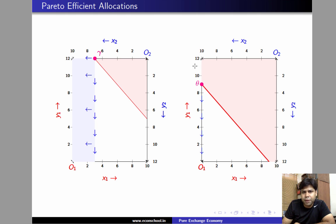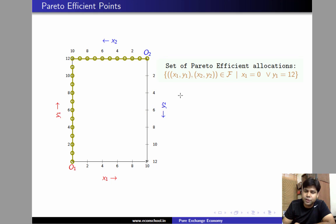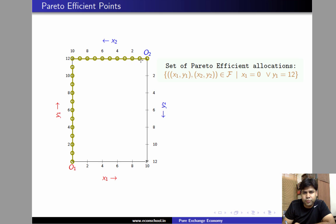Theta was an arbitrary pick from the vertical axis of individual 1, and gamma was an arbitrary pick from the horizontal axis of individual 2. Therefore, any point on the vertical axis of individual 1 is efficient, and any point on the horizontal axis of individual 2 is efficient. So the set of efficient allocations is: (x1, y1, x2, y2) such that either x1 = 0 (on the vertical axis of individual 1) or y1 = 12 (on the horizontal axis of individual 2). Thank you.